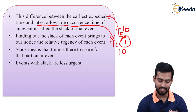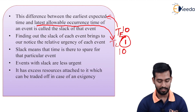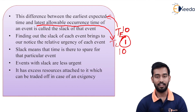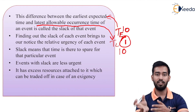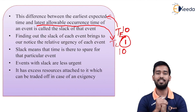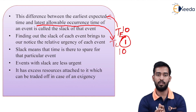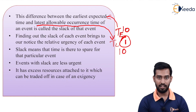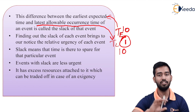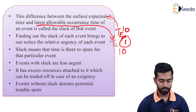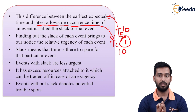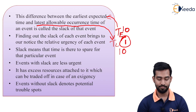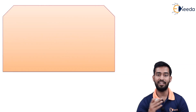Events with slack are less urgent — they have excess resources attached which can be traded off in case of any urgency. We can use those resources for other activities where the slack is zero and urgency is more, to complete those activities within the expected time. By finding out slack we can identify which activities can be delayed and which are allotted more resources, so those resources can be used for different activities. Events without slack denote potential trouble spots — we have to be very attentive to those activities and monitor them very precisely, otherwise the whole project will get delayed.